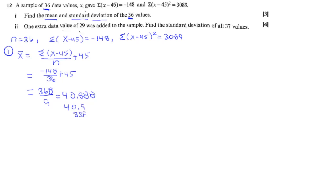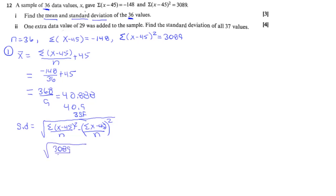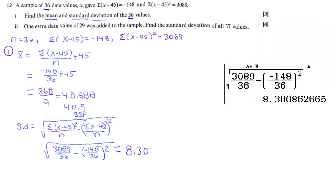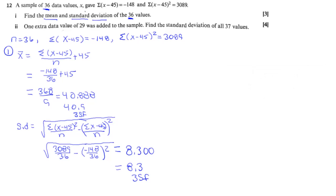For the standard deviation, we write the formula with both parts coded. Substituting the sum of (x minus 45) squared as 3089, n as 36, and the coded sum negative 148 over 36, we enter this into the calculator carefully. After double-checking, the standard deviation is 8.30 to three significant figures.